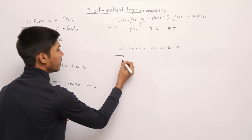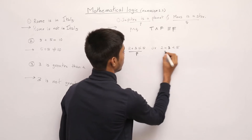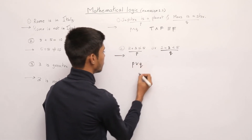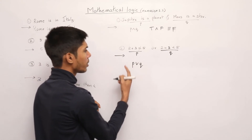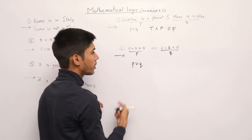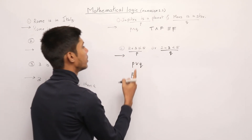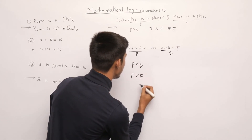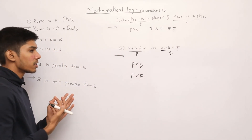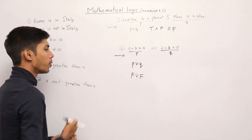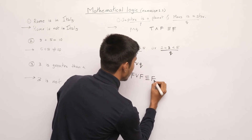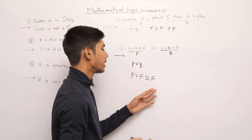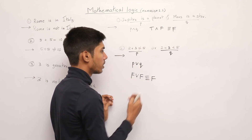The second statement involves p OR q, where q is '2 plus 3 is not equal to 5'. Since 2 plus 3 equals 5, the statement '2 plus 3 is not equal to 5' is false. In OR disjunction, if both are false then the truth value is false, otherwise true.